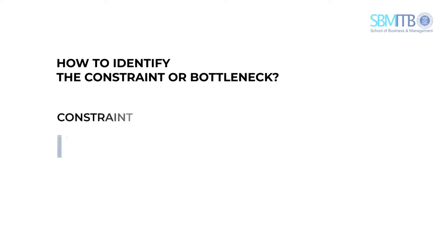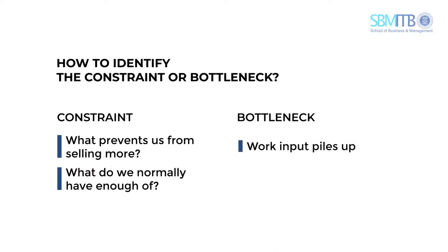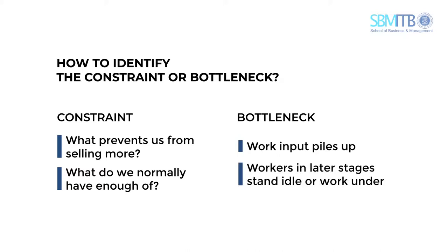Constraints and bottlenecks tend to have different causes, and constraints usually have more severe implications in the process. Two specific questions are useful in identifying the constraint: first, what prevents us from selling more? And secondly, what do we normally have enough of? Meanwhile, bottlenecks are usually obvious — work input piles up ahead of the bottleneck, and workers in later stages stay idle or work under capacity.